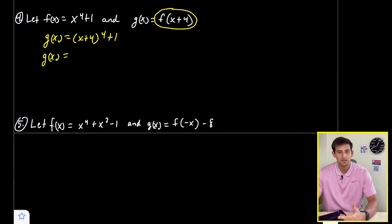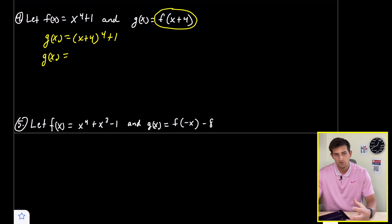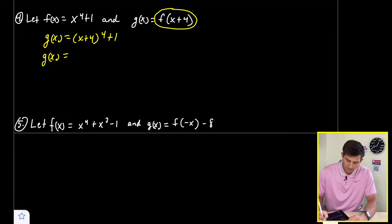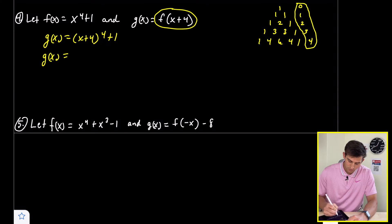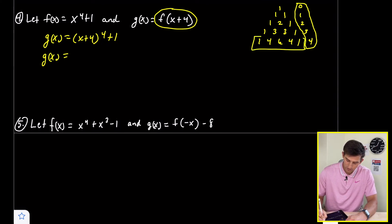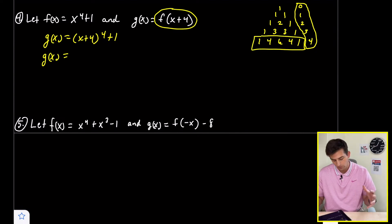I made a video on this — I'll link it in the cards — to show how we expand and what our coefficients and term degrees should be. Pascal's triangle has rows: row zero is 1; row one is 1, 1; row two is 1, 2, 1; row three is 1, 3, 3, 1; and row four is 1, 4, 6, 4, 1. Since we have an exponent of four, we use row four's numbers as our coefficients when expanding the binomial.